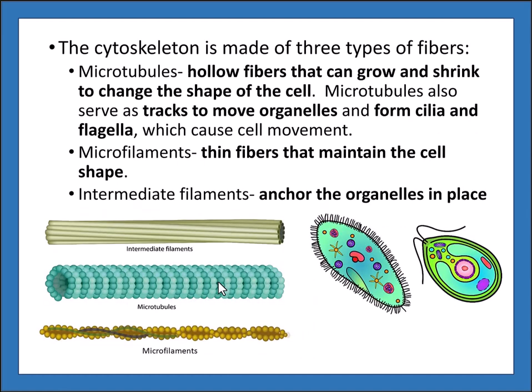The cytoskeleton is made of three different types of fibers: microtubules, which are hollow fibers that can grow and shrink to change the shape of the cell and also act as tracts to move organelles and form cilia and flagella; microfilaments, which are thin fibers that maintain the cell's shape; and intermediate filaments, which anchor the organelles in place.